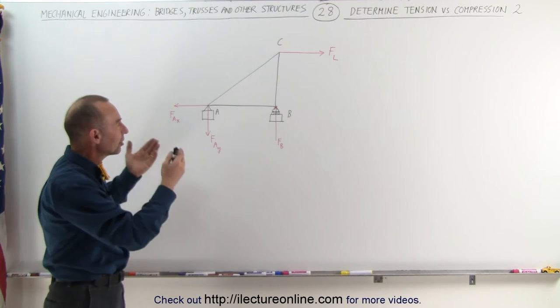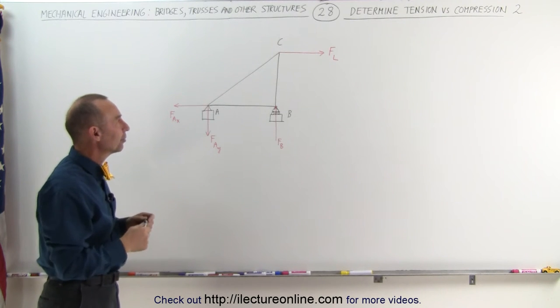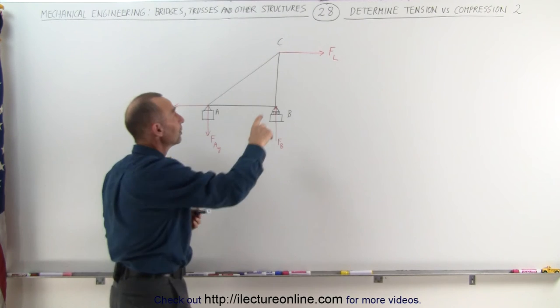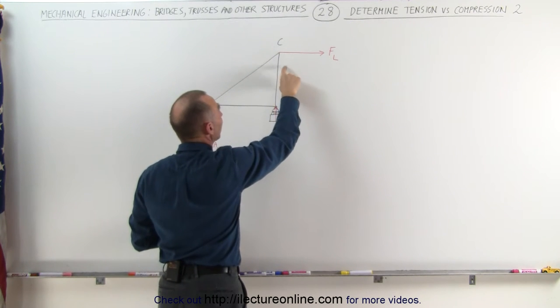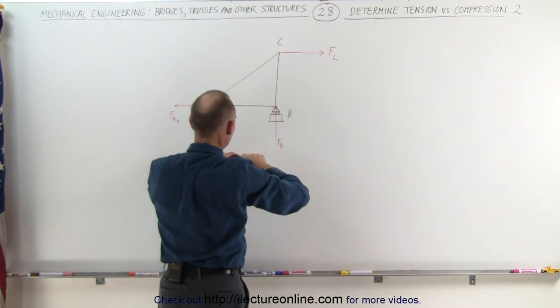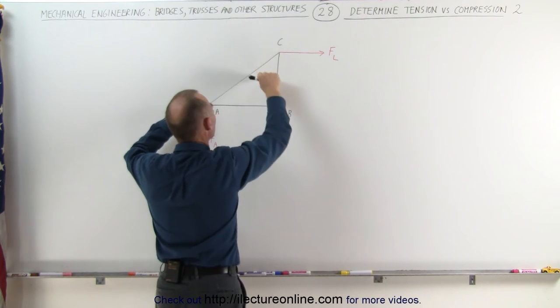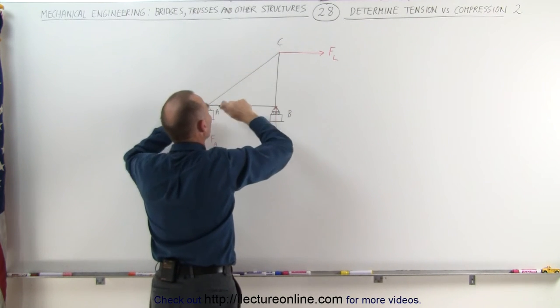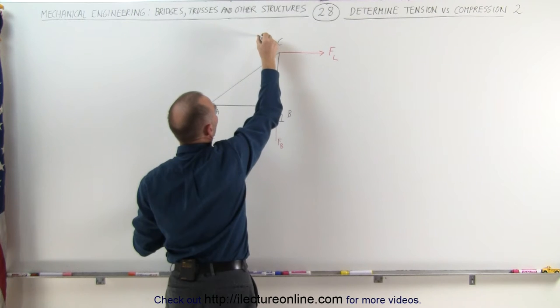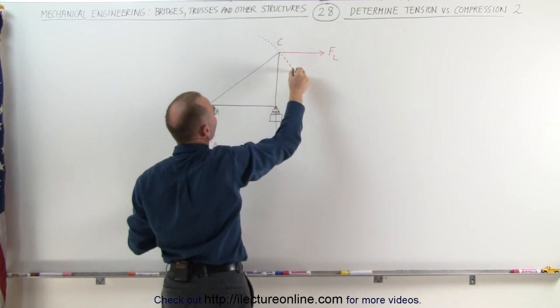How do we determine the tension and compression on these particular members? First of all, let's assume that this member was not there and a force was pulling in this direction. That means that if this could then pivot about this point, if the member could rotate about that point, the arc of rotation would look something like this.